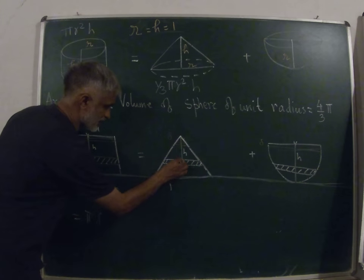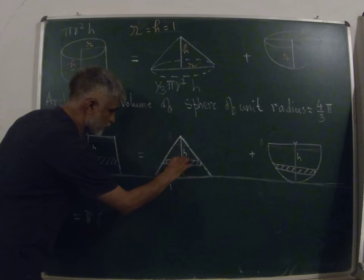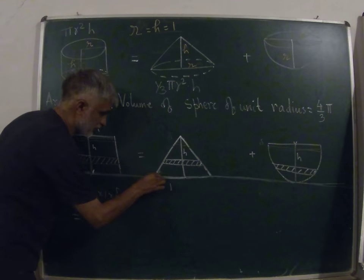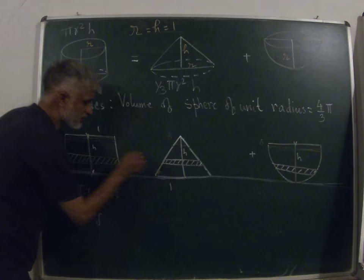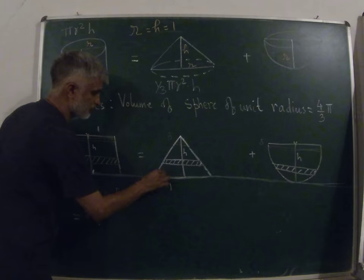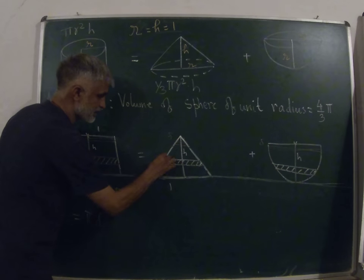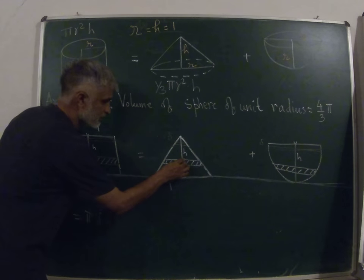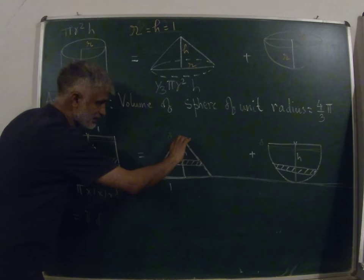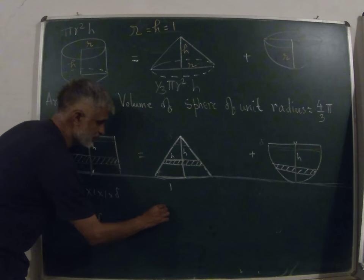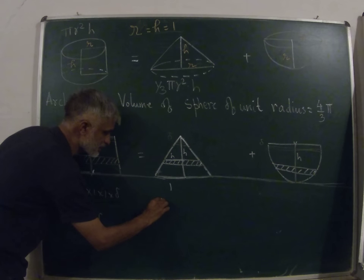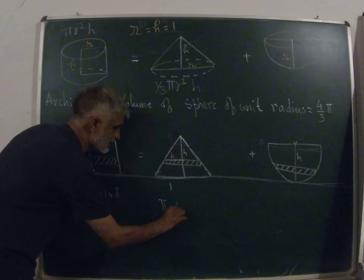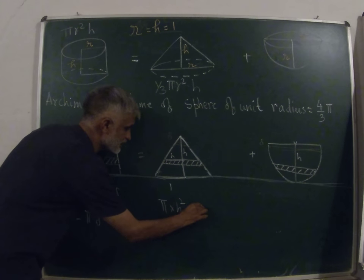This radius, because this is one and this is one, this is an isosceles triangle with 90-45-45, which is the same thing here, 90-45-45. It's an isosceles triangle, so this radius of the disk is also h. So the radius of the disk which is at a height h from the top is also h, and therefore the volume of this disk is going to be πr², in this case h², into thickness which is delta.